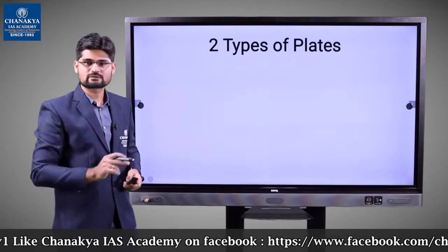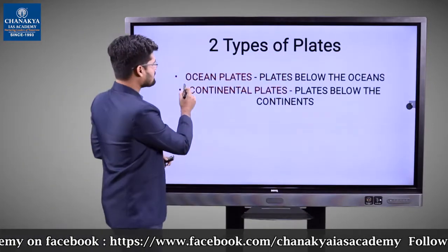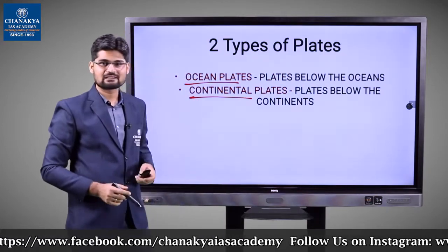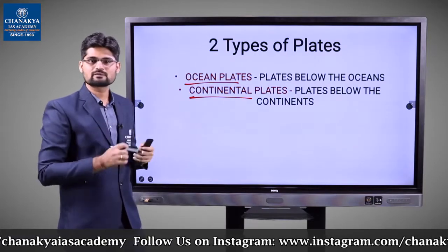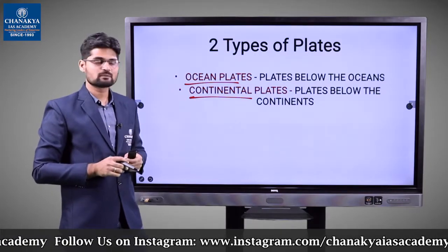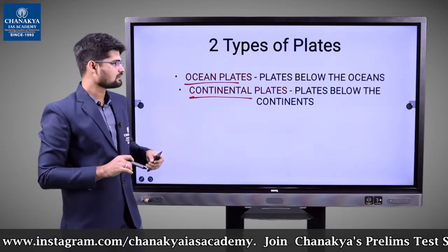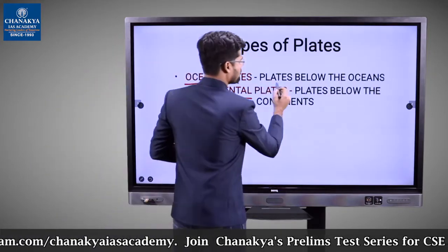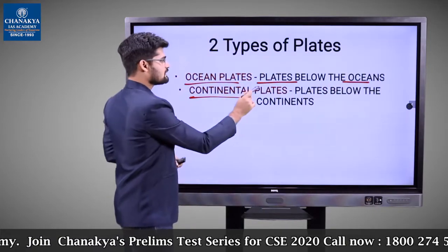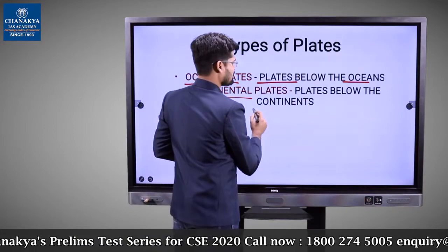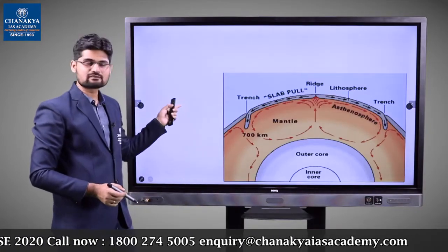There are two types of plates: oceanic plates and continental plates. We have already discussed these a little in the interior structure and isostasy — their depth and how they vary. Plates below the oceans are oceanic plates, and continental plates are above.